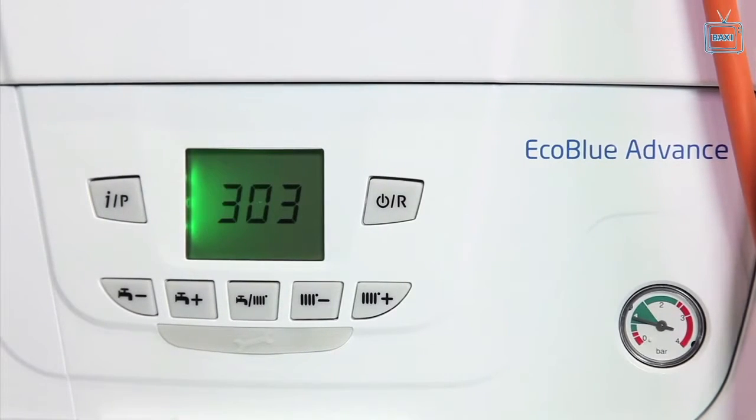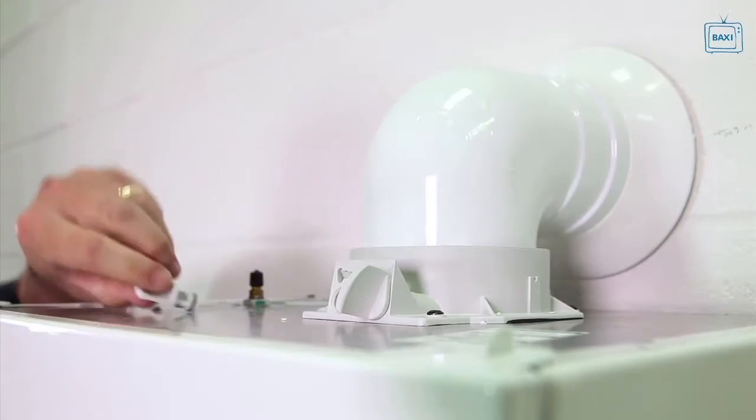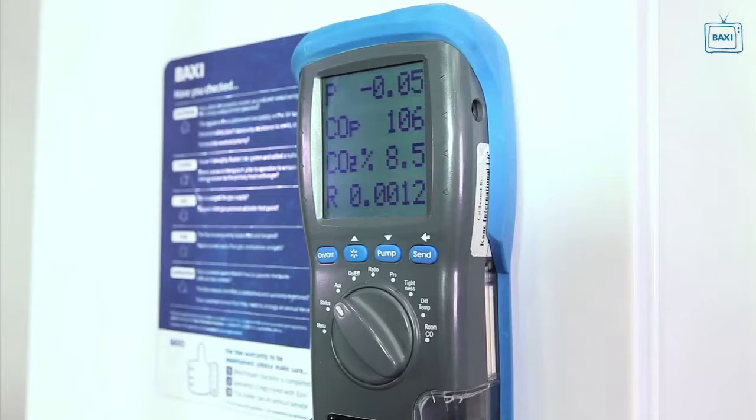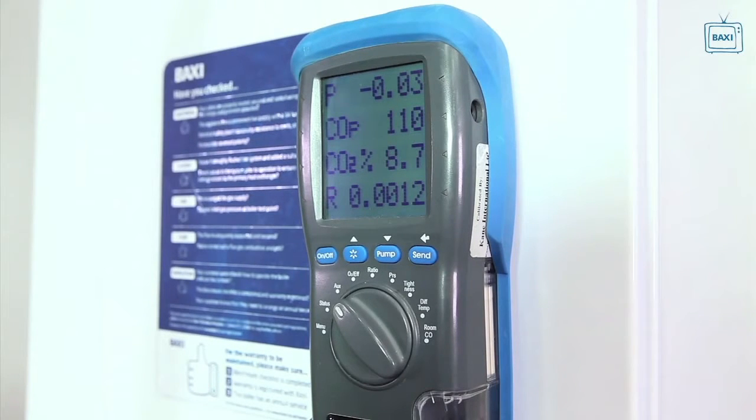Check the carbon monoxide and combustion ratio while the boiler is still running at maximum rate. Insert the analyzer probe into the flue gas test point. Once stabilised, a positive check will show a reading of 8.7% plus or minus 0.2%.